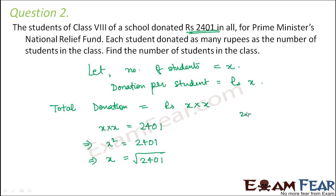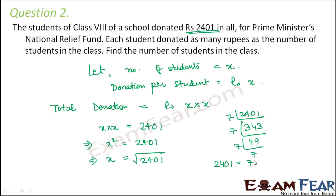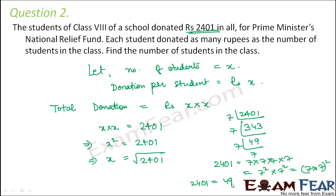To find the square root, we do prime factorization. 2401 gets divided by 7: 7 into 343, then 7 into 49, then 7 into 7. So 2401 can be written as 7 into 7 into 7 into 7, which equals 7 square into 7 square, that is 49 square. Therefore root over 2401 equals 49, and so there are 49 students in the class.